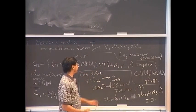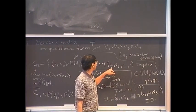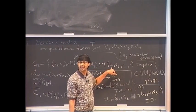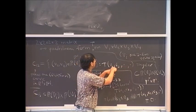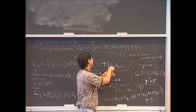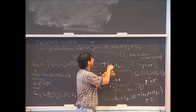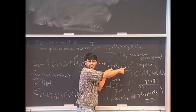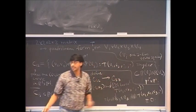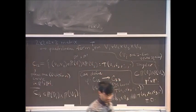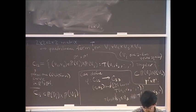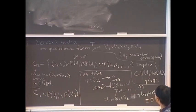Another thing one can do is define curves in P1 cross P1 cross P1: C123 inside P1 cross P1 cross P1 by the condition that T(V1, V2, V3, dot) is identically zero. So here are six genus one curves in various P1 cross P1s, and they're all isomorphic.